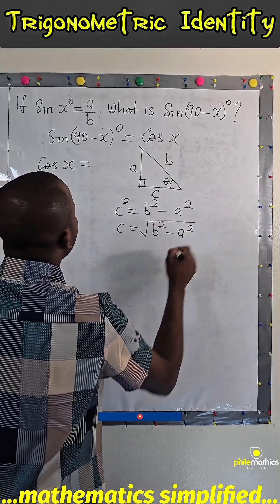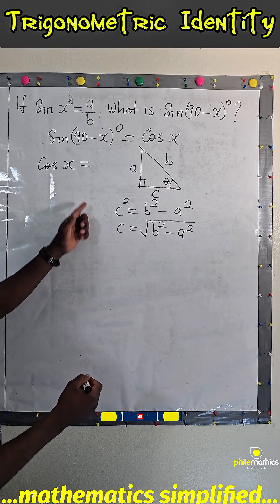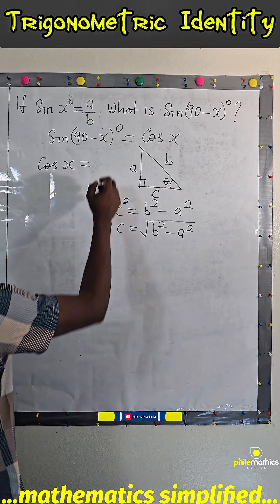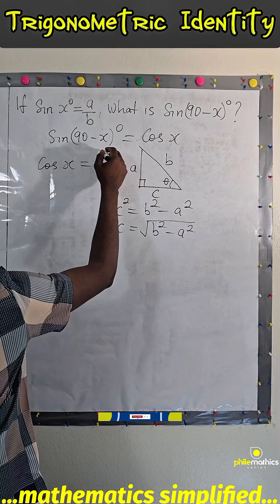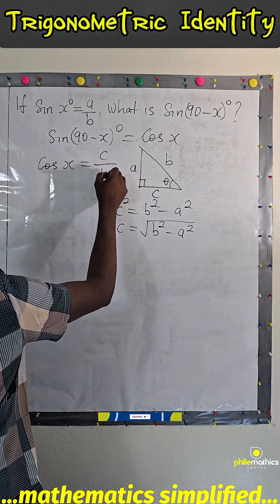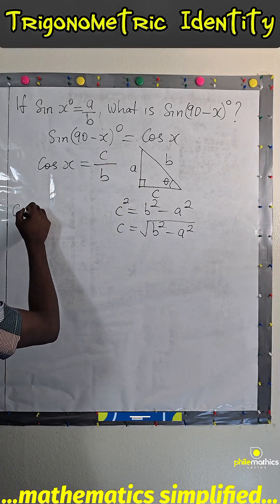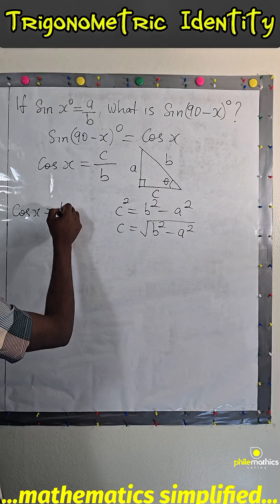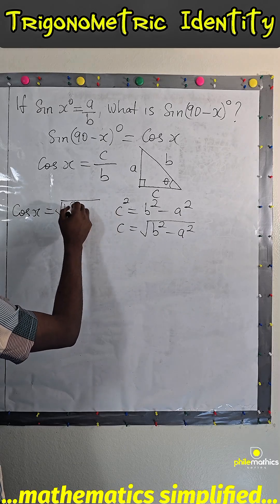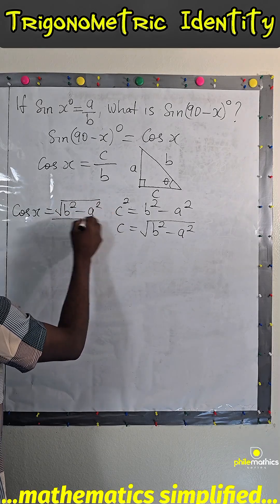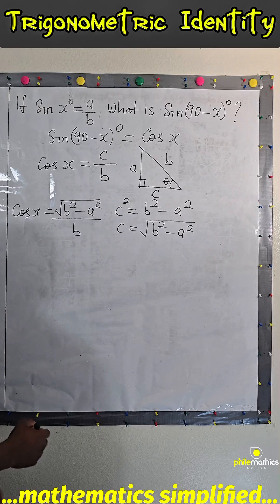And you know that cos x is adjacent over hypotenuse, which is c over b. So cos x will be square root of b square minus a square over b. That is what sine 90 minus x is, since it equals cos x.